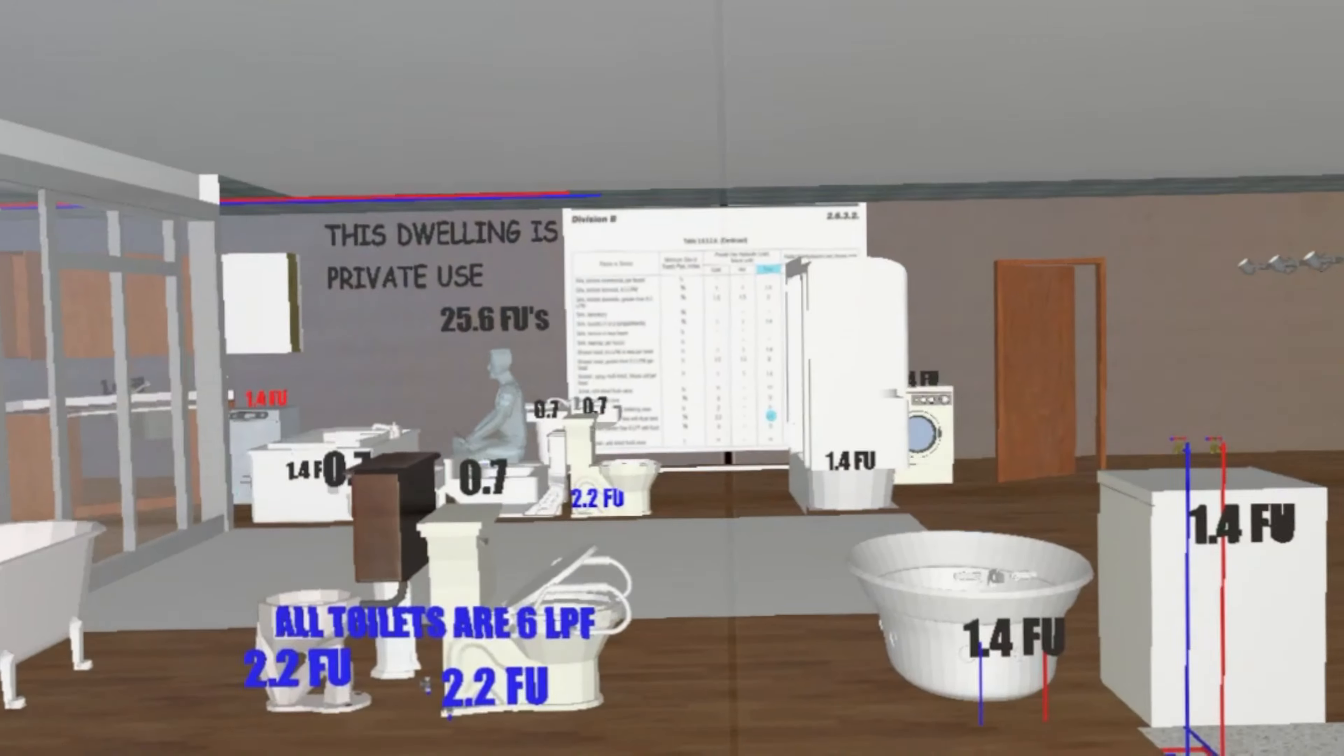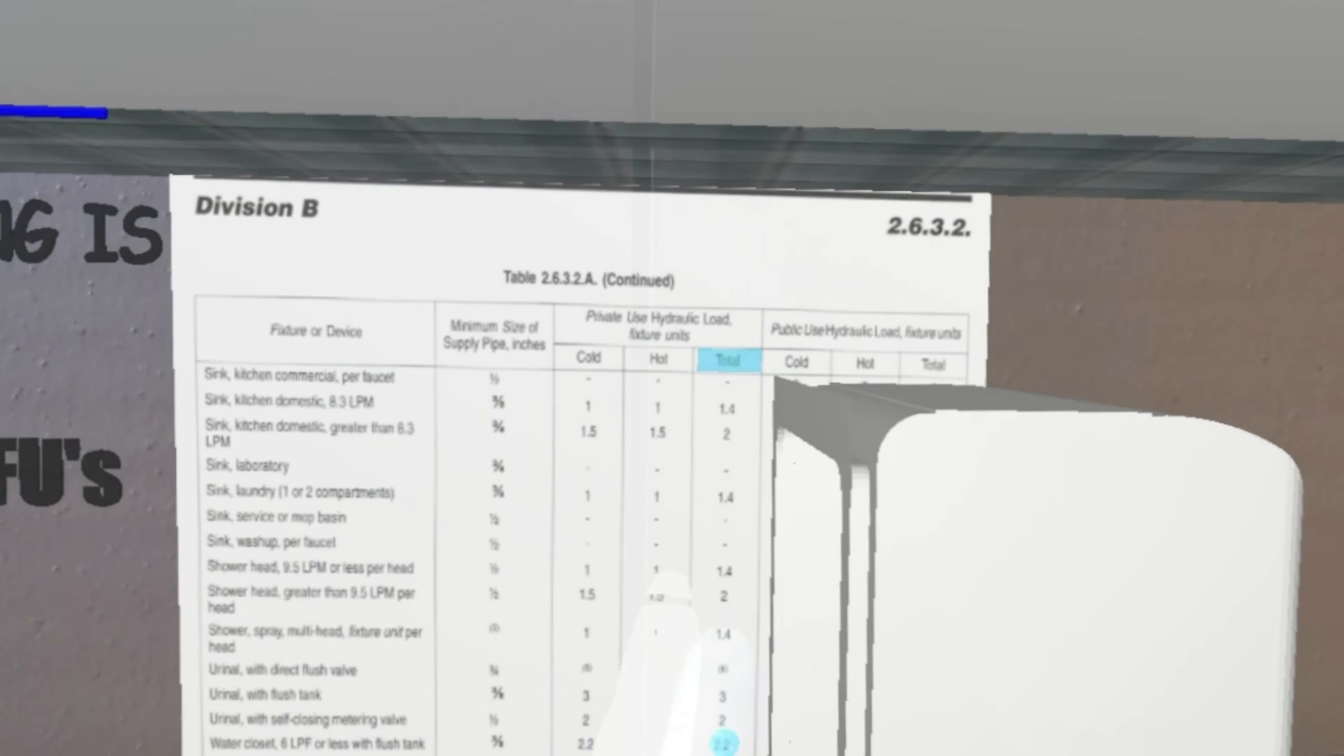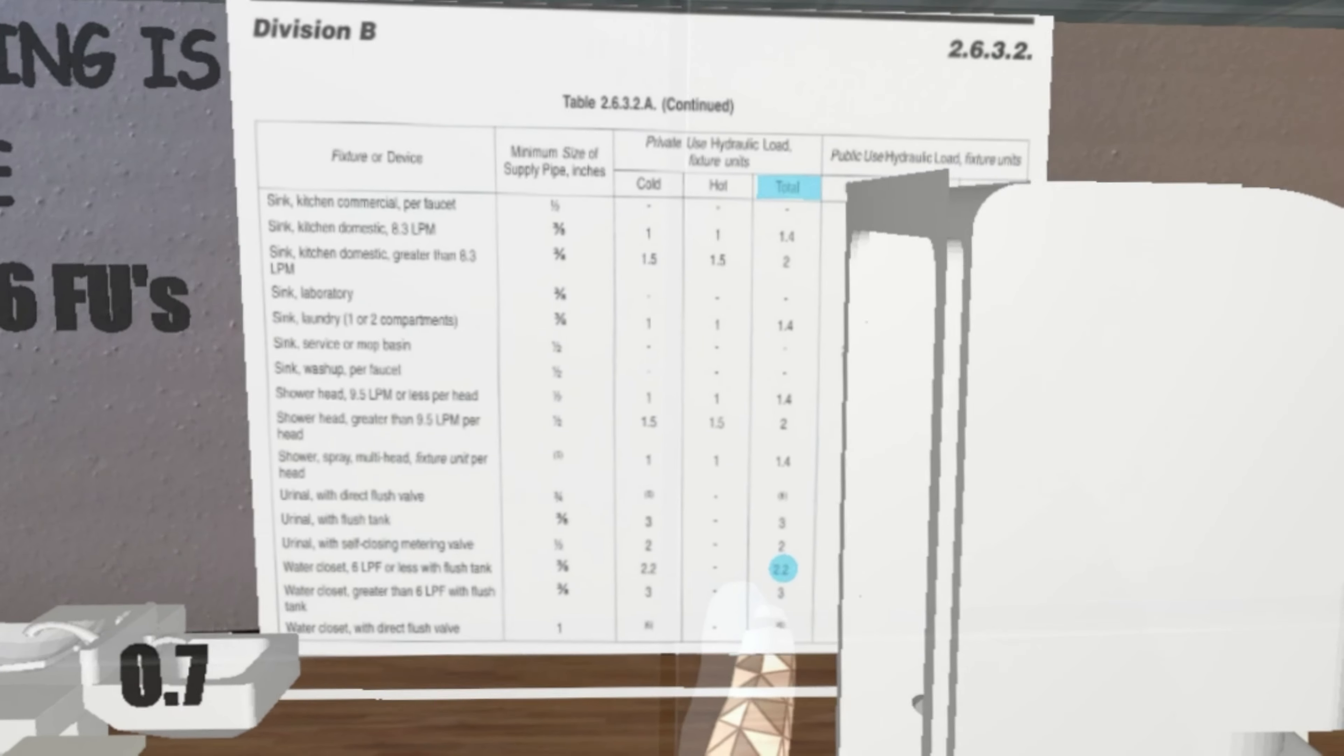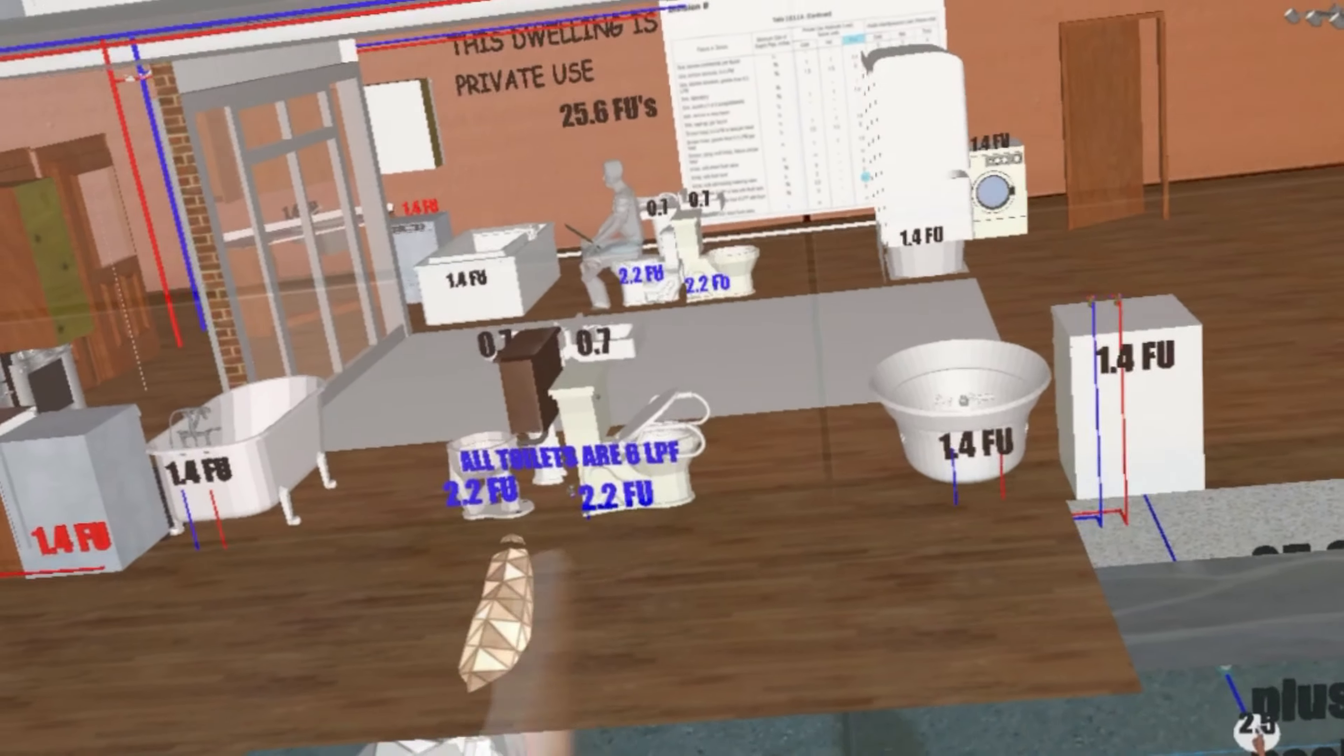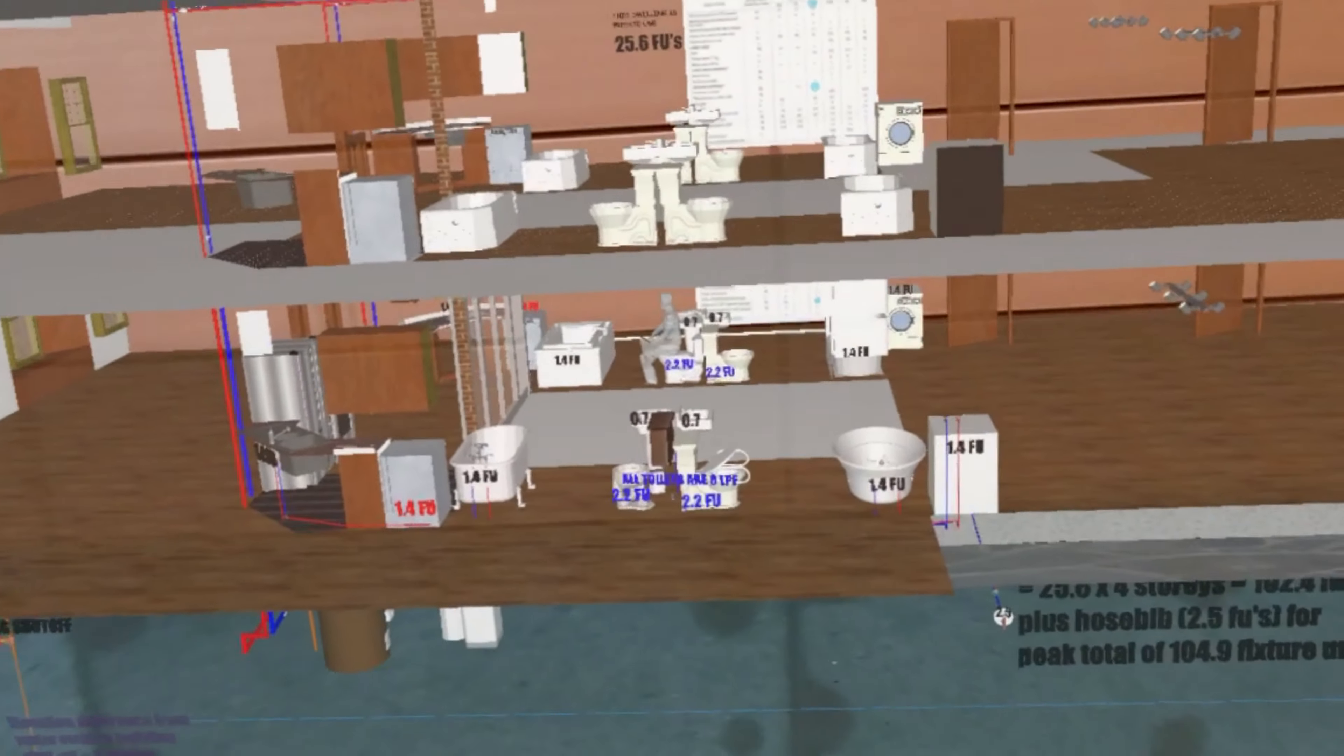And how do you know what these fixture units are? Well the table is on each floor here. So if I look here, this is the table I look at in the code book that tells me all the fixture unit loads. So there is the water closet, six liter per flush, it's 2.2 fixture units. So that's what this is - these two toilets, they're all six liter per flush, they are worth 2.2 fixture units. That's how you add them up.